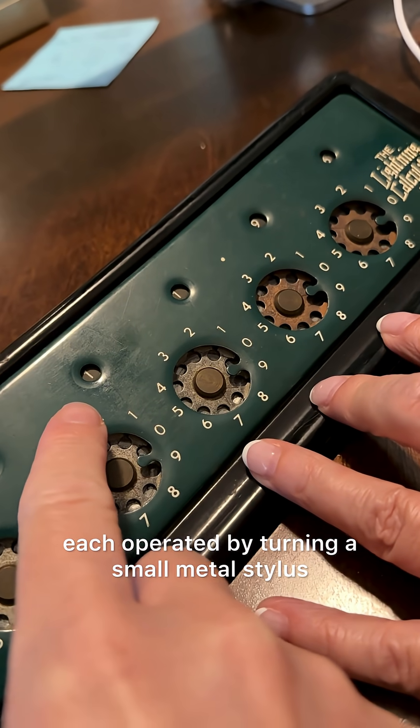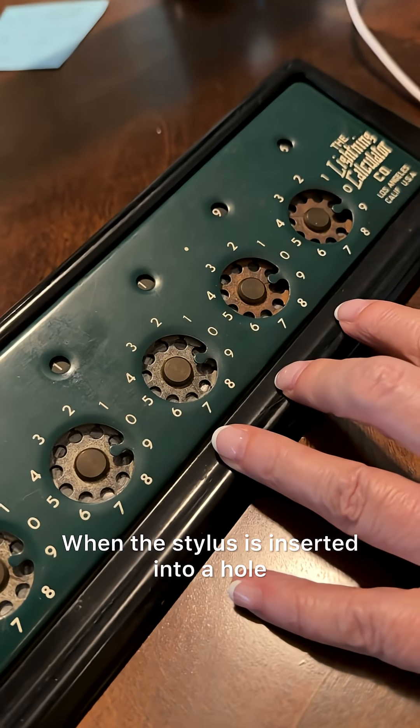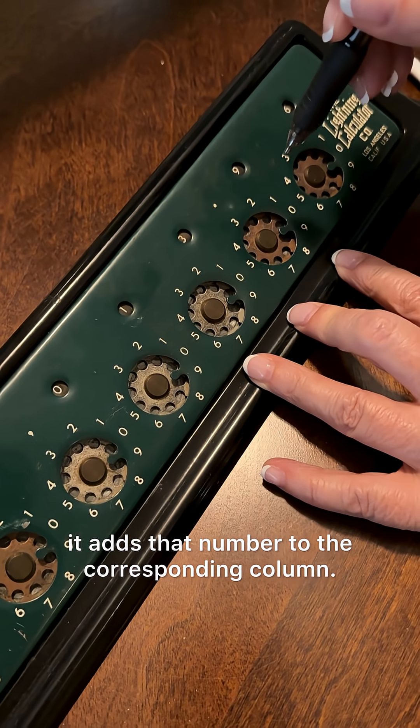Each is operated by turning a small metal stylus in a circular motion. When the stylus is inserted into a hole and rotated clockwise, it adds that number to the corresponding column.